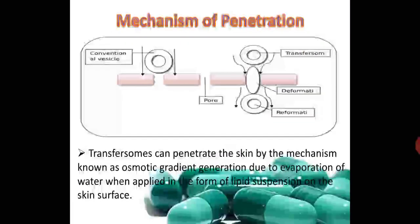Mechanism of penetration: as seen in the picture, conventional vesicles are round and cannot pass from the outer atmosphere into the stratum corneum because they cannot deform and the pores are very small. Transferosomes, by contrast, deform and reform — following the principle of deformation and reformation, just like clay, they deform according to the stratum corneum and move from one side to the other. The mechanism is known as osmotic gradient generation, driven by evaporation of water when applied as a lipid suspension on the skin surface.